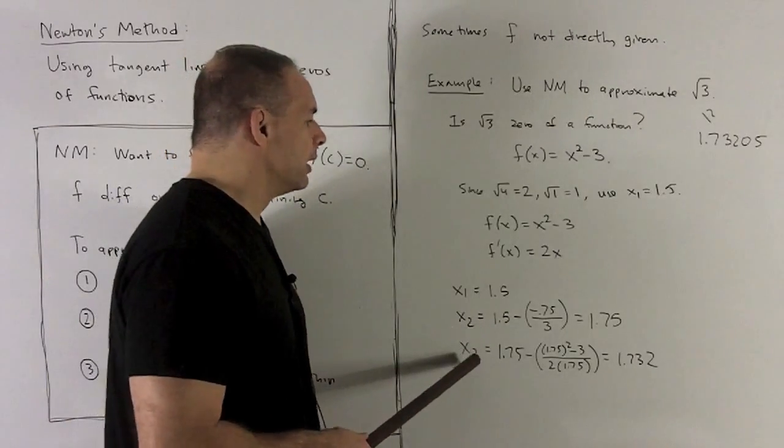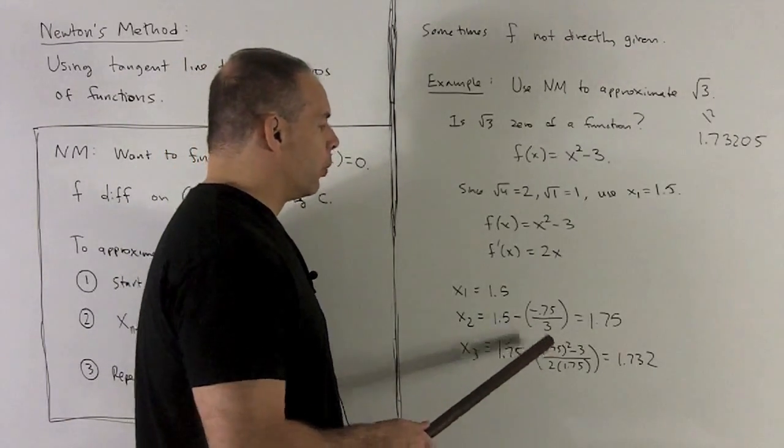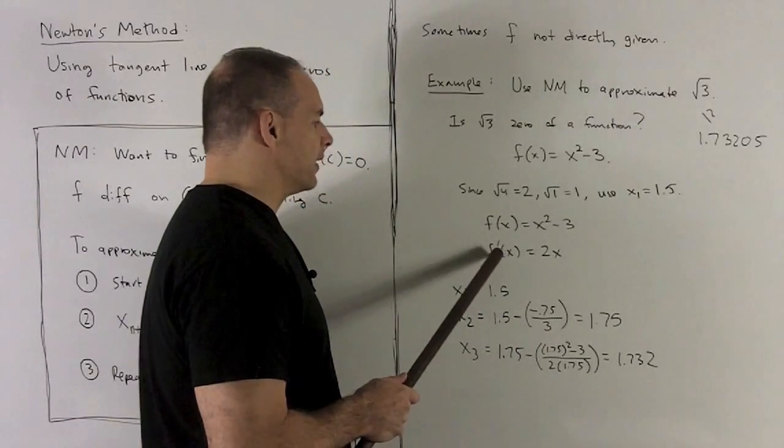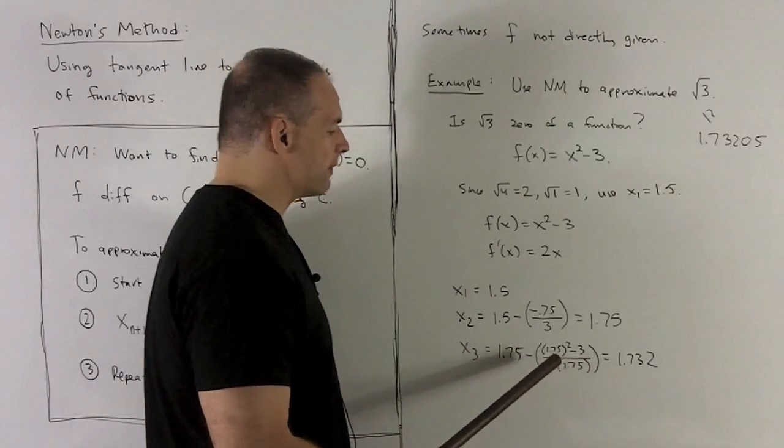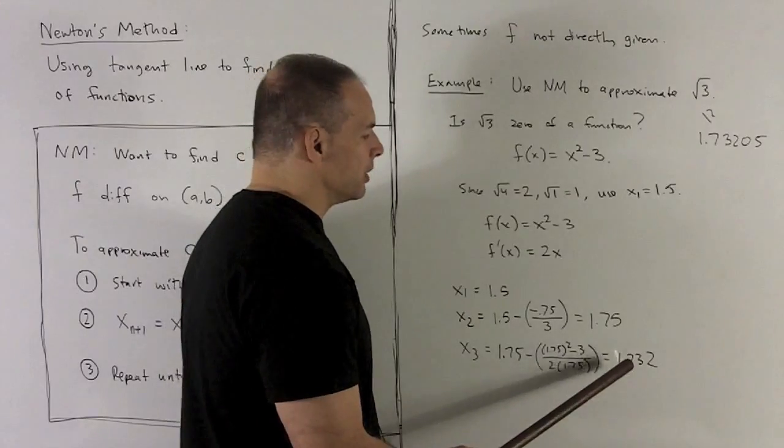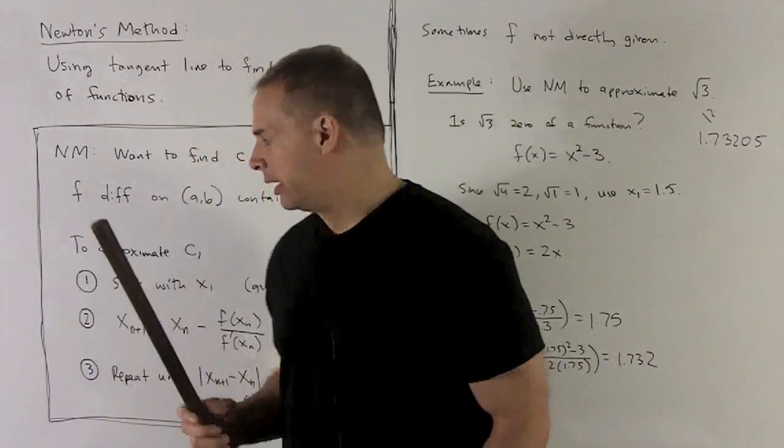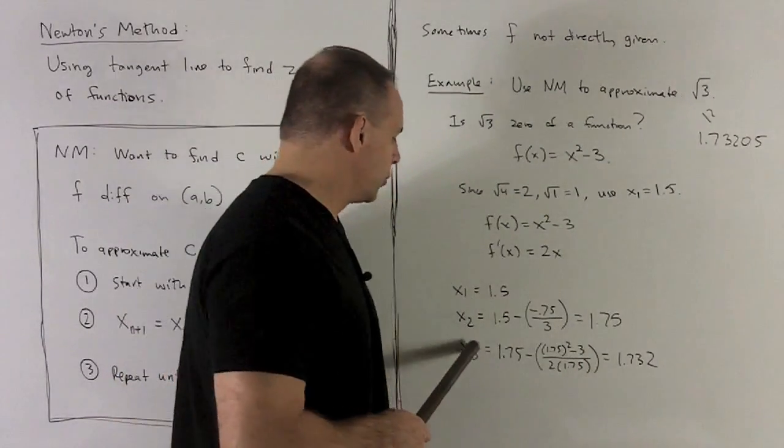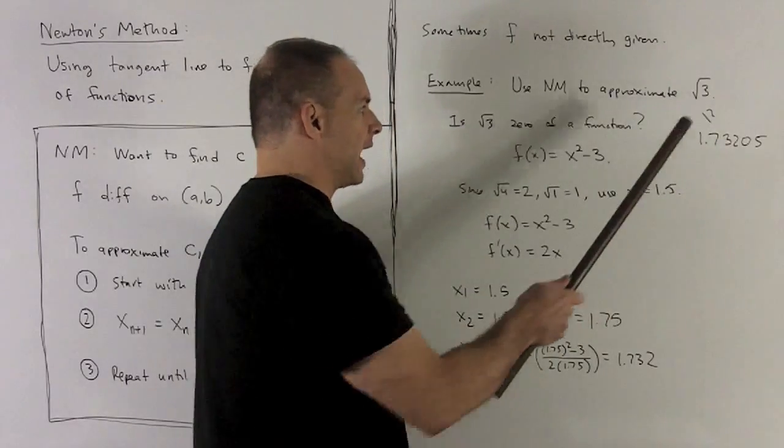To get x3, take my answer from x2, 1.75. We put 1.75 into f. That gives me the thing on top. 1.75 into f prime gives me 2 times 1.75. We crunch this down, and we notice what comes out is 1.732. So after two iterations, the iteration meaning runs through our gadget here, two iterations gets me down to the thousandth place in the actual answer.